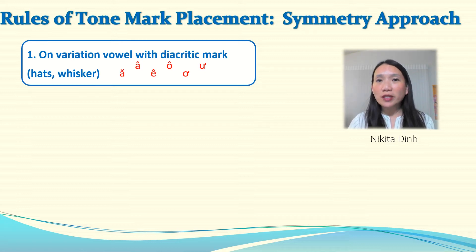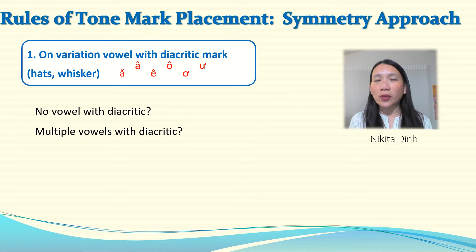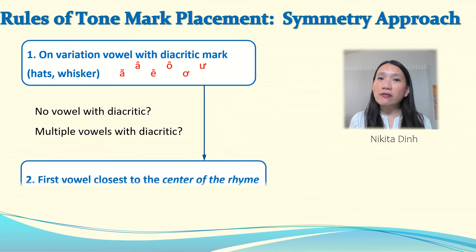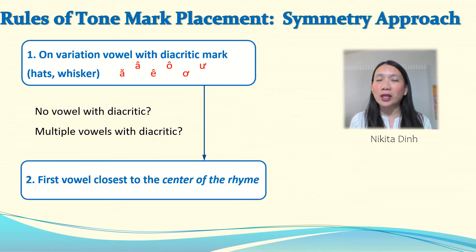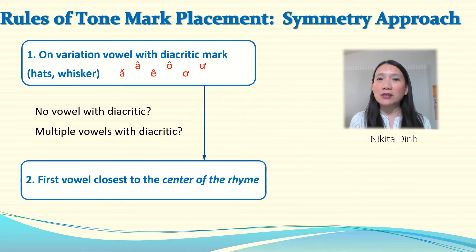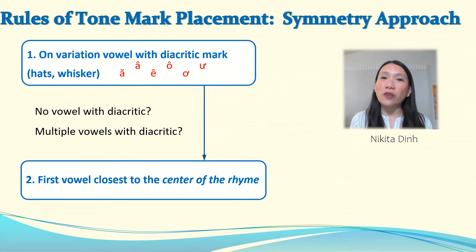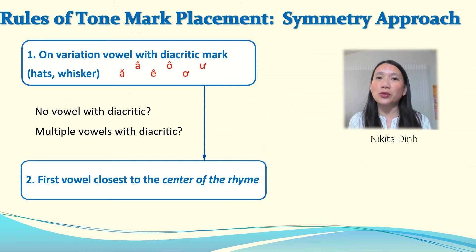If you don't have such a vowel, or if you have multiple of them, only then the second rule applies: place the tone mark on the vowel closest to the center of the rhyme. Sometimes the center of the rhyme falls in a space between two vowels. In that case, you would have two vowels equally distanced from the center, and you just choose the first one — the one to the left, since we read left to right.